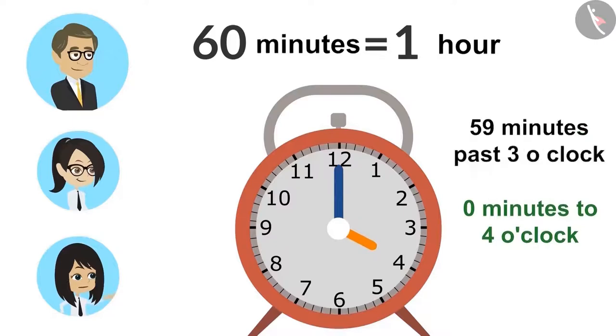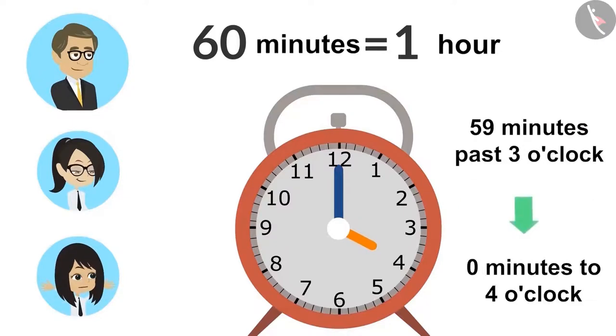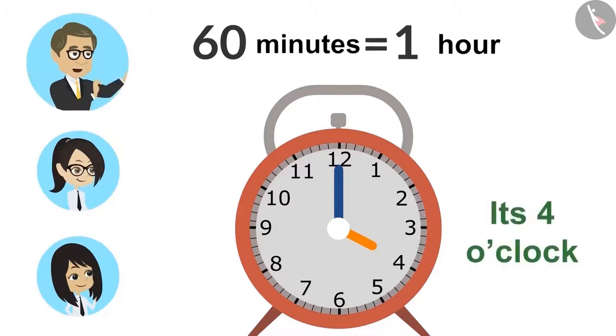I got it, sir. After 59 minutes past 3 o'clock, it is better to say 0 minutes to 4 o'clock. Absolutely right, Neha. Or, we can say, it's 4 o'clock.